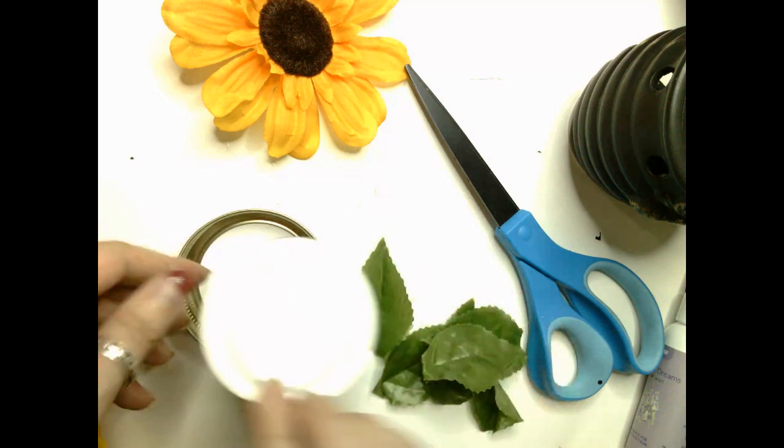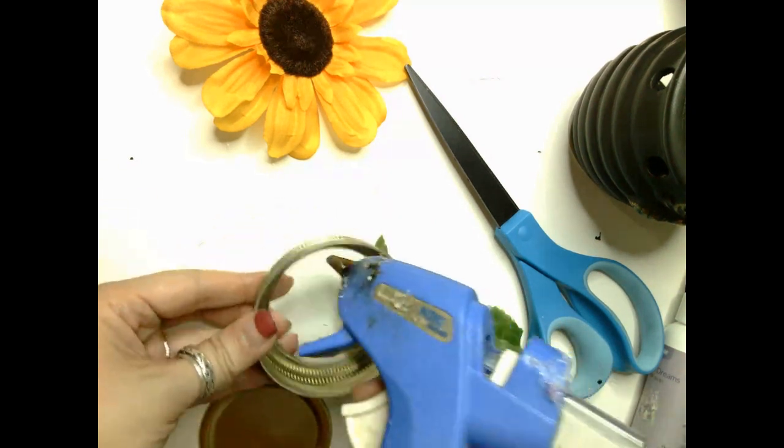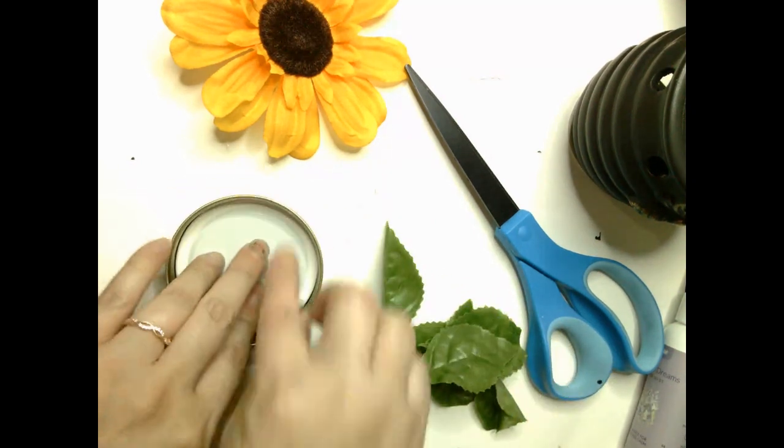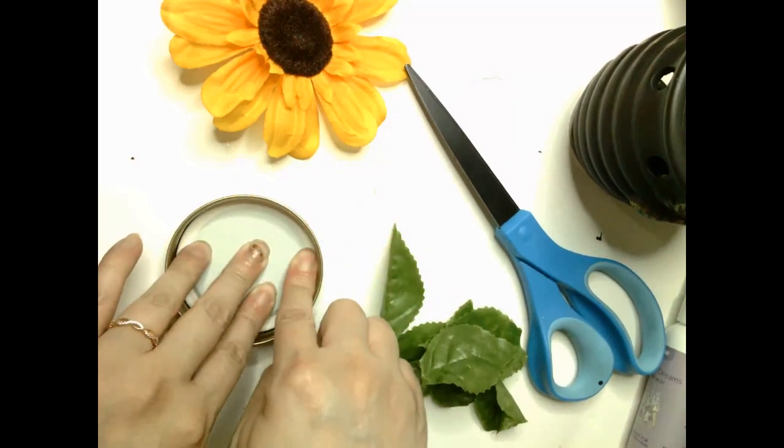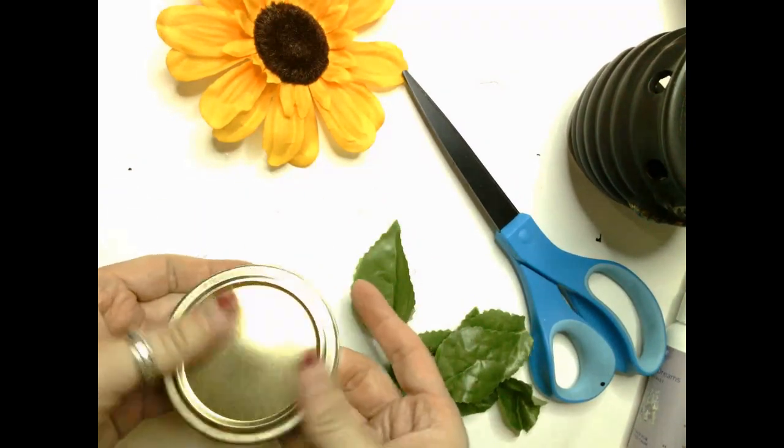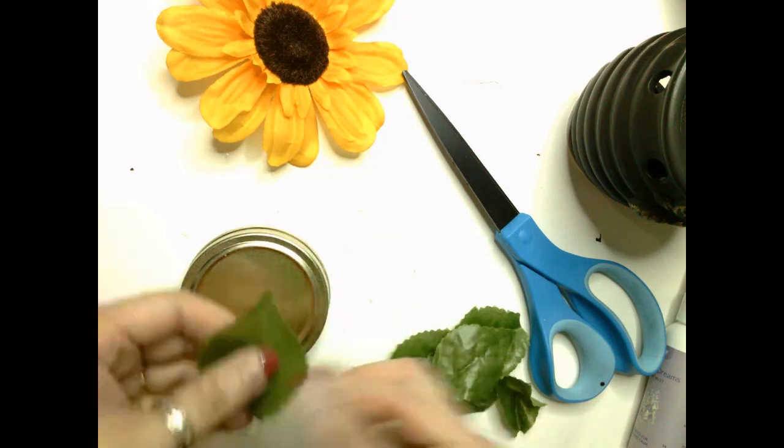The first thing I'm doing is removing the sticker from the bottom of the glass jar. Then I'm taking the sunflower with the leaves, cutting them in half after I pull them off, and gluing them around the outer edge of the lid.